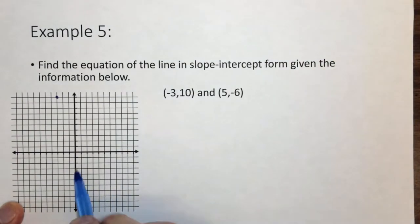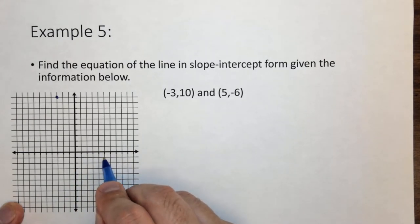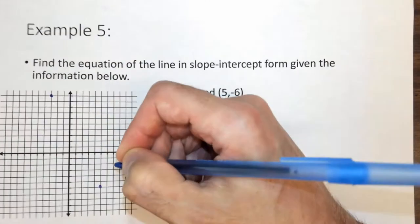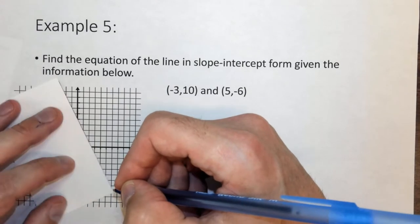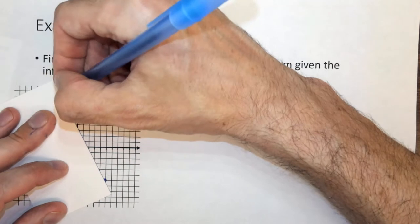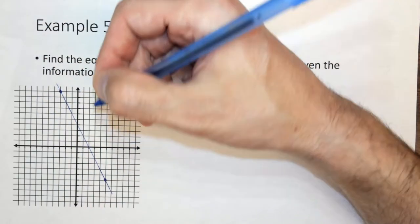Now we go to 5, minus 6, 1, 2, 3, 4, 5, 1, 2, 3, 4, 5, 6, negative, and we have these points. I'm hoping my card is long enough here, and it barely is, so I can draw this line. So this is the line that we're interested in here.